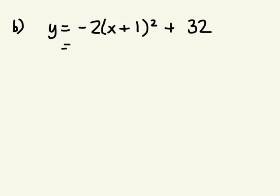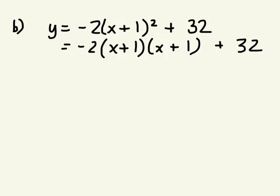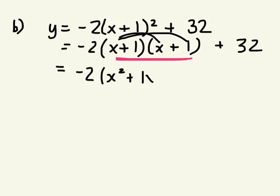Okay, so we need to expand first. x plus 1 squared means x plus 1 times x plus 1 plus the 32. We'll deal with that at the end. This is what you're multiplying first. So we have the negative 2. x times x. x times 1. 1 times x. 1 times 1, plus the 32 at the end.